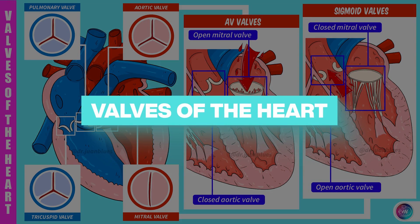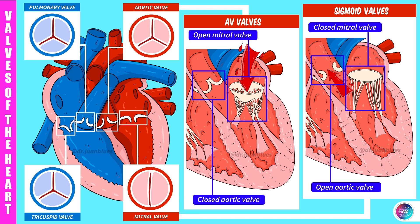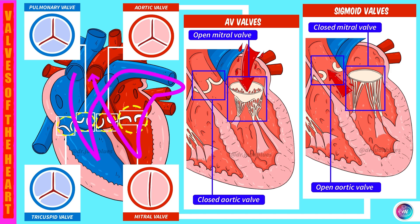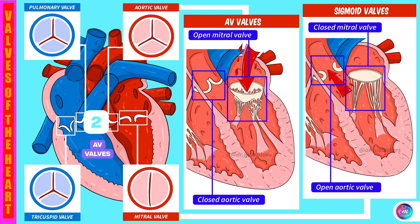Valves of the heart. Now our heart structure is a little more complete. Highlighted in white are some details found between the chambers and between the vessels and the chambers — these elements represent the valves of the heart. The valves work by controlling the flow of blood and prevent blood returning to the cavity it originated from, thus ensuring a unidirectional flow of blood. Broadly speaking, there are two types of valves: the AV valves and the semilunar valves. The AV, or atrioventricular valves, can be found between the atria and the ventricles, and the semilunar valves are those found between the ventricles and the vessels.